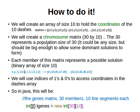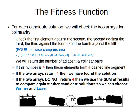In Java it will look like this: the genes matrix — genes, chromosomes, or candidate solutions are all the same thing, used interchangeably — 30 members of 10 line segments each, as just an integer matrix. This is the representation or encoding, which is the first problem. The second problem now is the fitness — how do we evaluate each candidate solution?